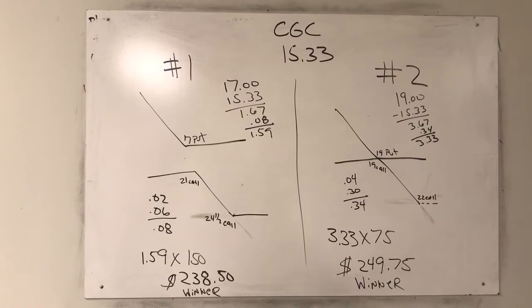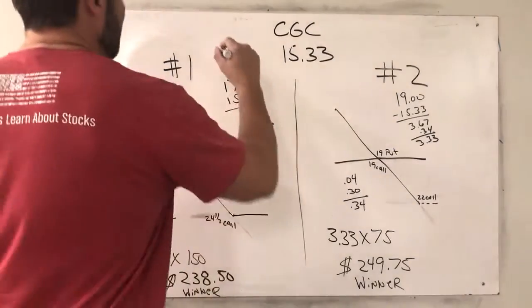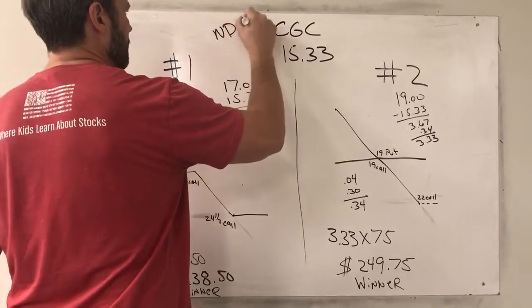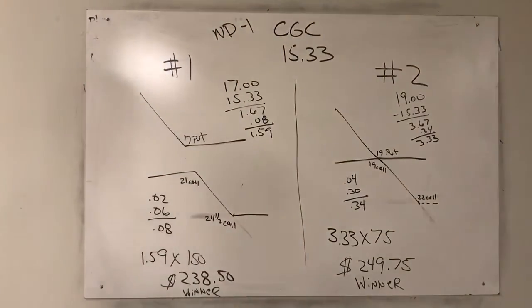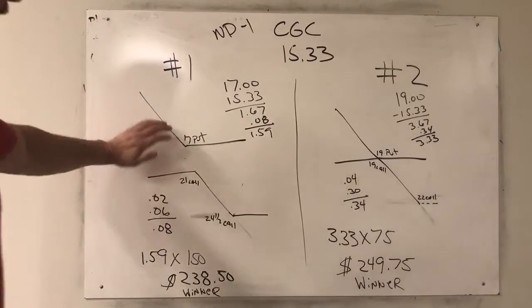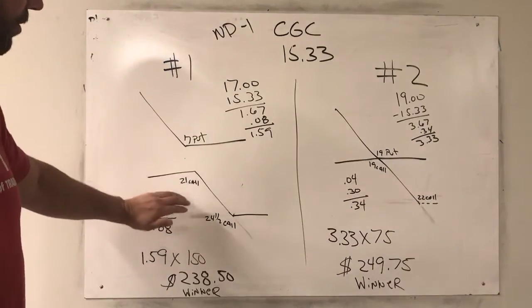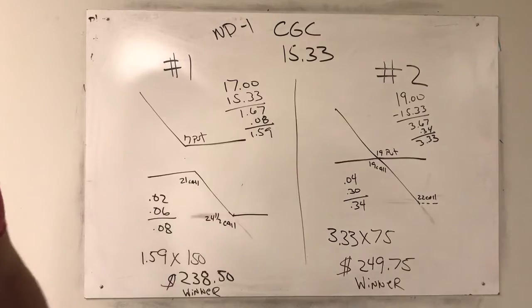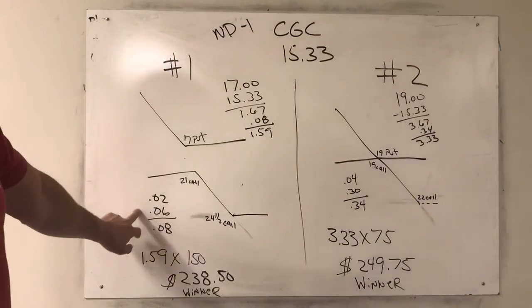All right, welcome to the Hudson Board of Trade. Just going over ND1's CGC combos that we did this week. He reversed course. We put on these combos. Choice one, we wanted to own the 17 put and we were willing to sell the 21-24 half call spread to do that. That trade cost us six cents to get into.